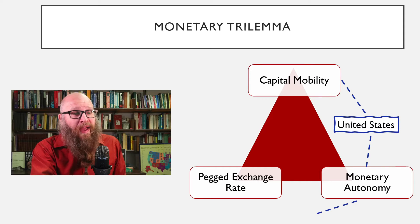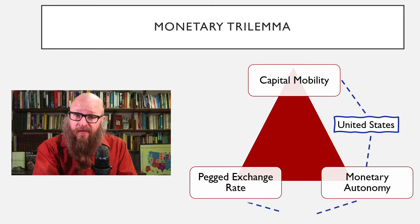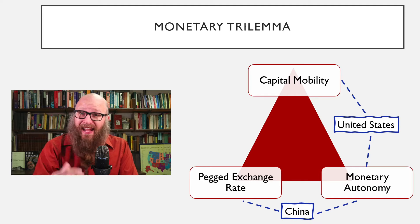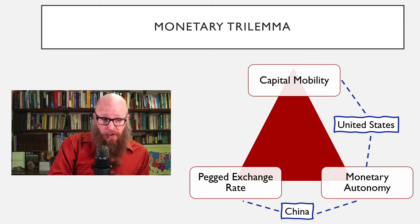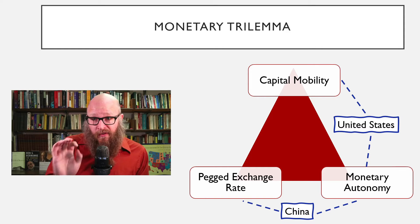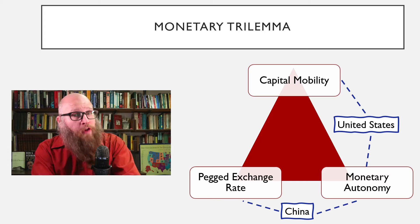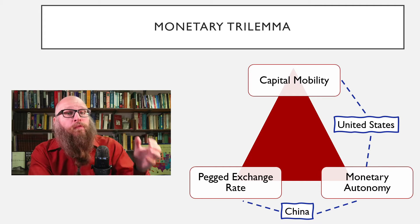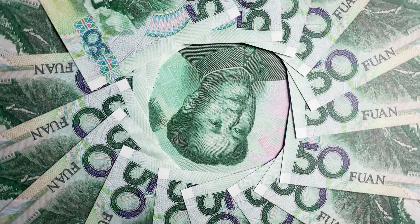On the bottom side, having domestic monetary autonomy as well as a relatively pegged exchange rate, we would see the country of China. They engage in a lot of trade with the rest of the world, and their macroeconomy is dependent upon trade, so they use their monetary policy to make sure that exchange rate stays a certain amount. And on the opposite side of that corner, China does not have capital mobility — it is very difficult to move money into or out of the country.